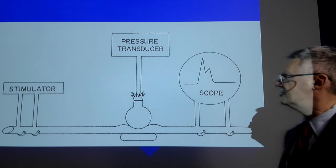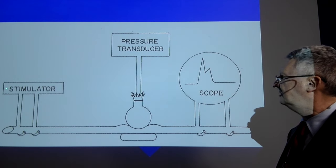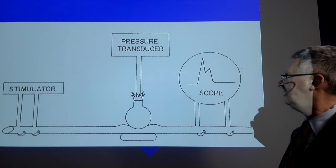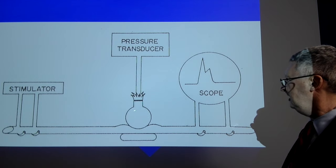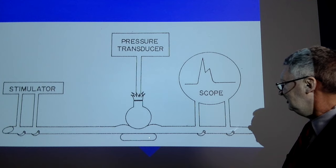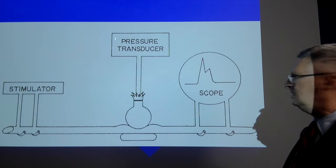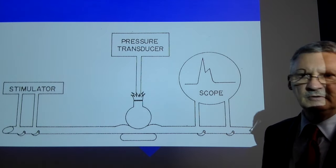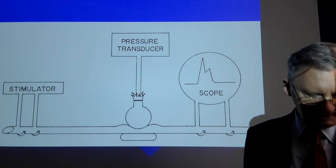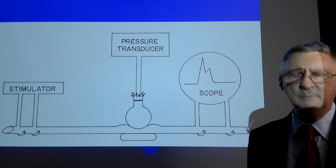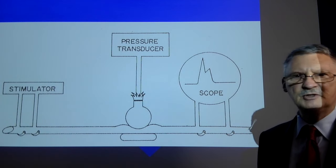This is the experimental setup Sharpless used. He exposed a sciatic nerve, had an electrical stimulator, and was able to compress it using a thin balloon working against a plastic foot. A pressure transducer recorded the amount of pressure being applied, and an oscilloscope on the other end allowed recording and measurement of the amplitude of the compound action potential.